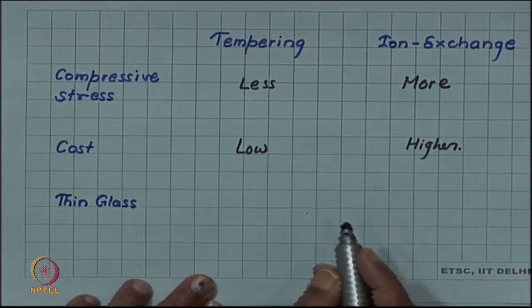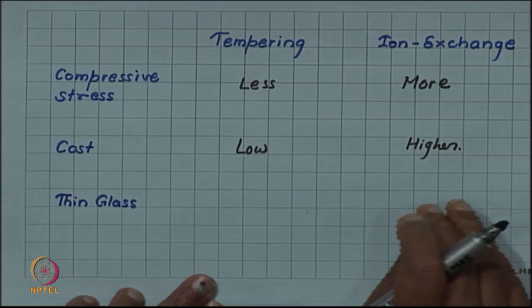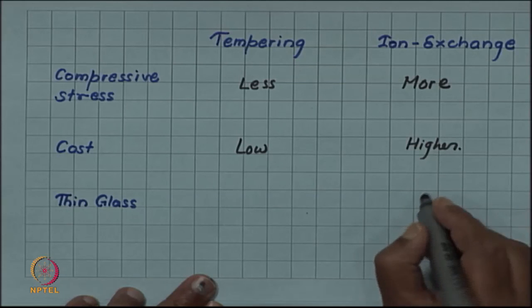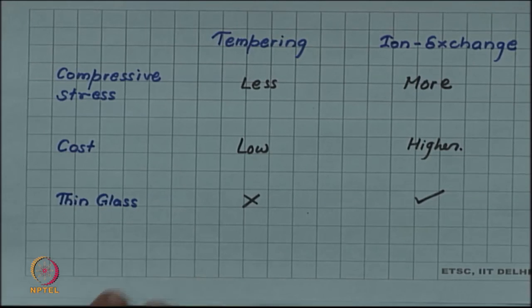The shape can change whereas ion exchange method is a chemical method and is much more gentle from that point of view. So thin glass can be handled by ion exchange, but not by tempering.